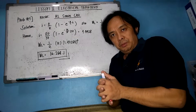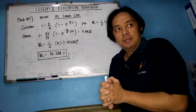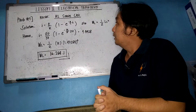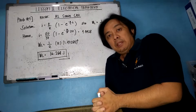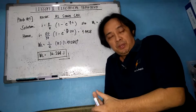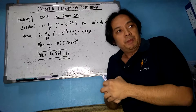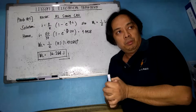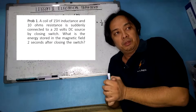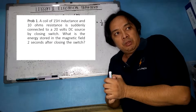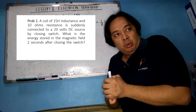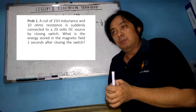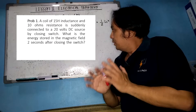Hello and good day to all of you. Now we will solve some problems on electrical transients. The first problem: a coil of 15 henry inductance and 10 ohm resistance is suddenly connected to a 20 volt DC source by closing a switch. We need to compute for the energy stored in the magnetic field two seconds after the closing of the switch.